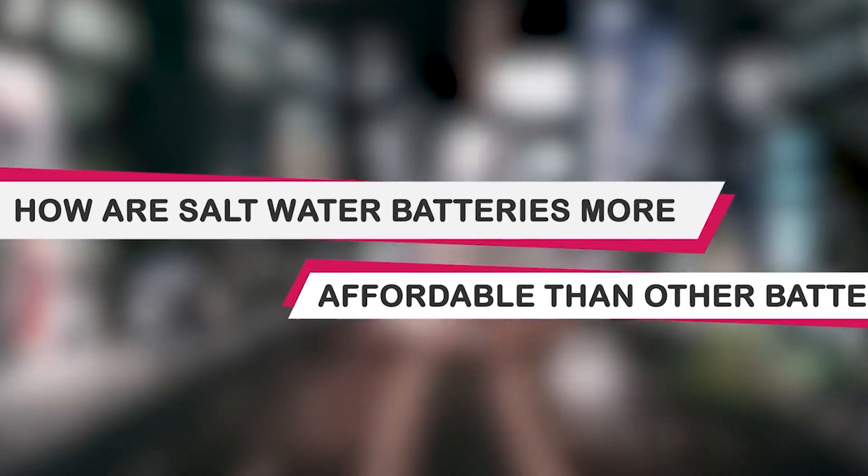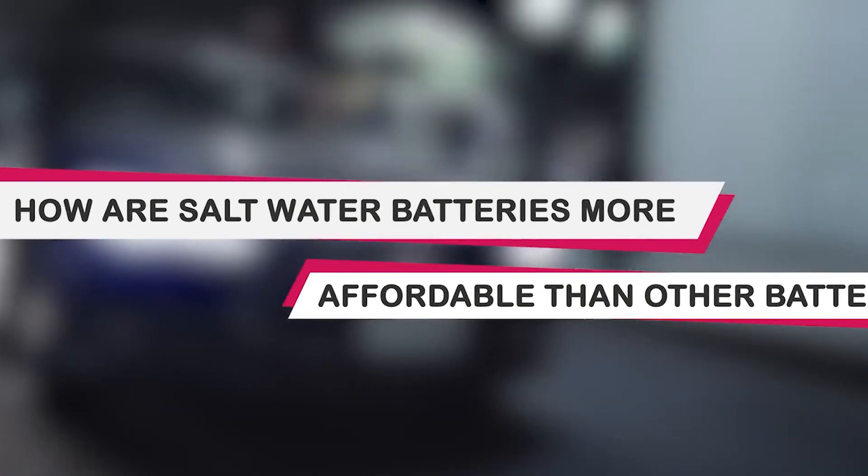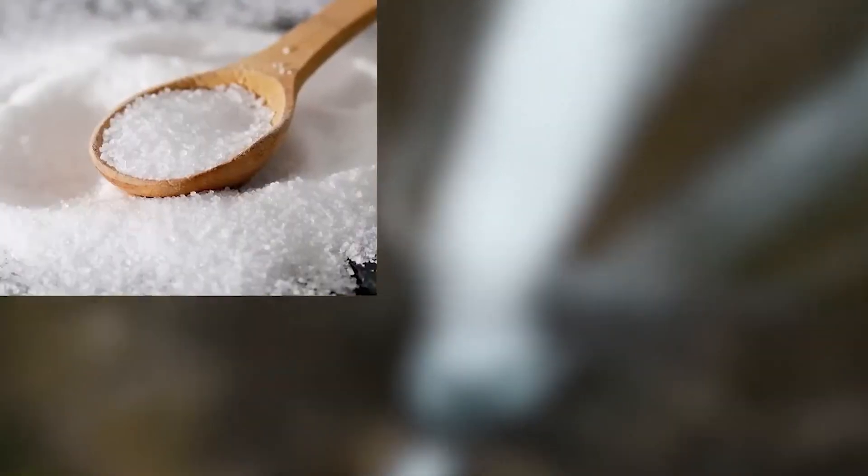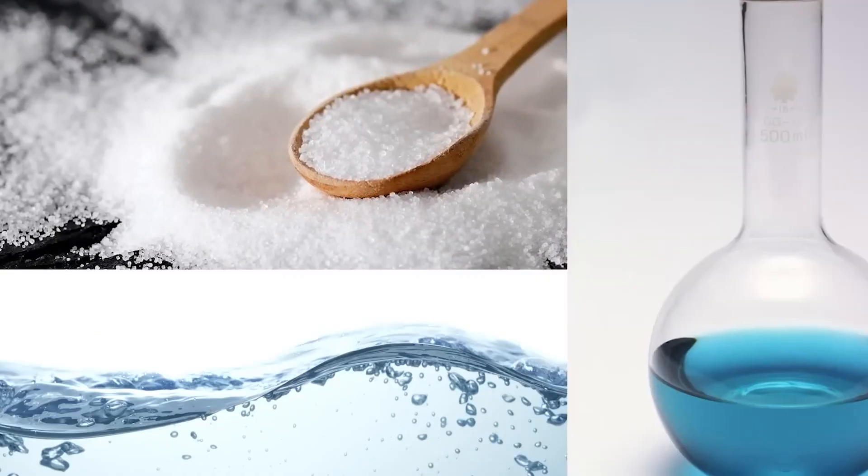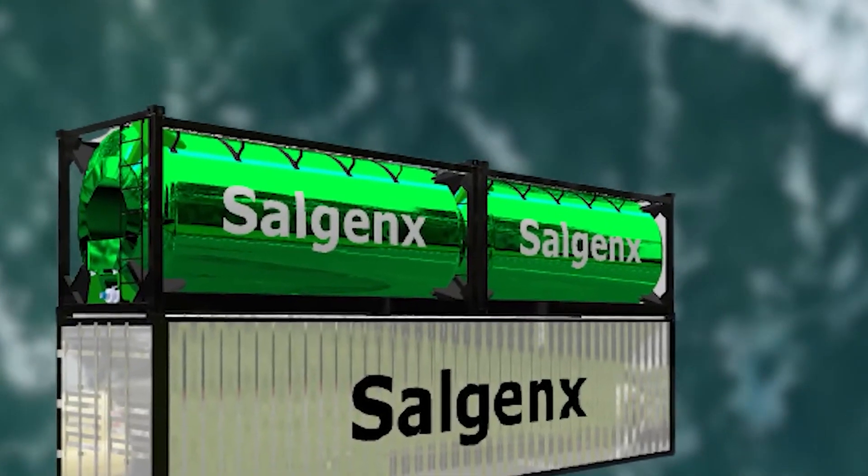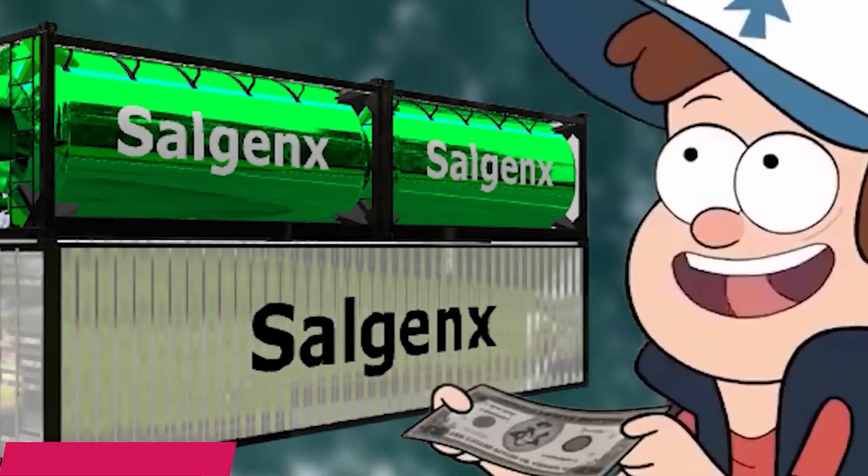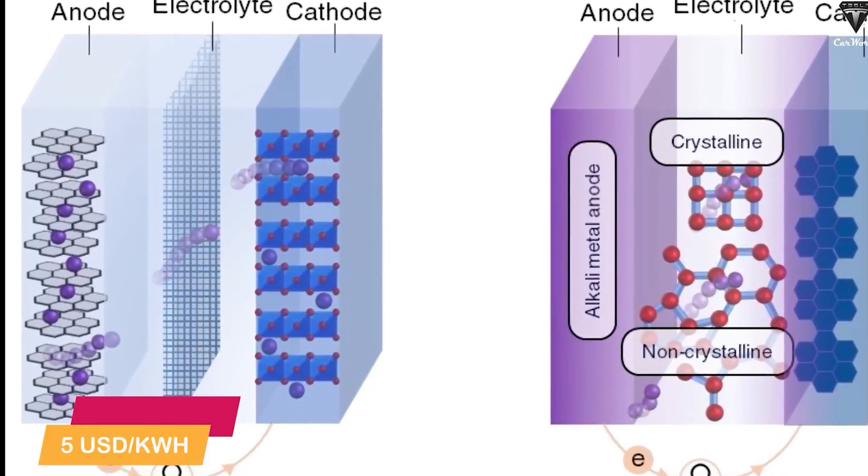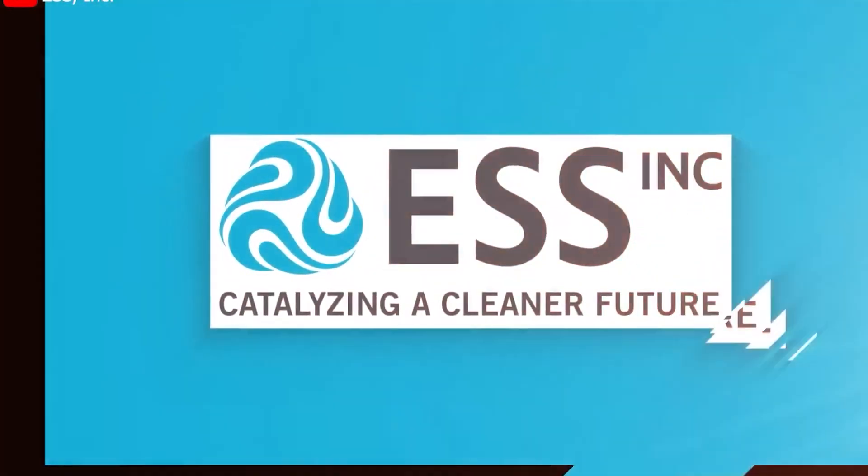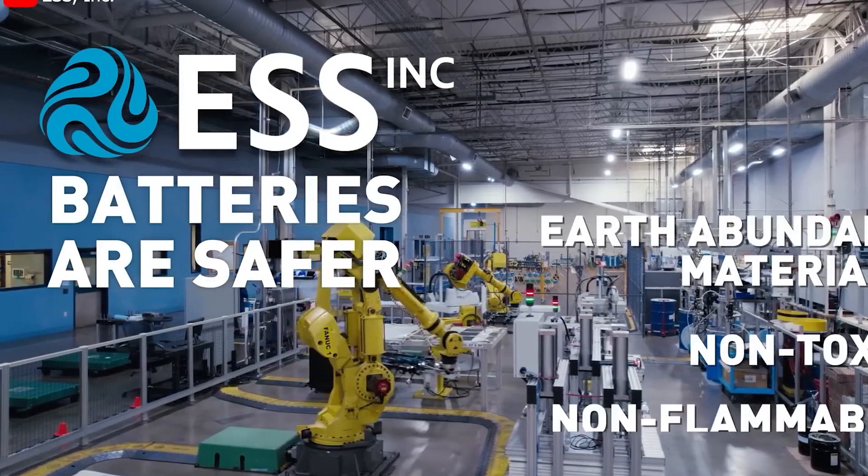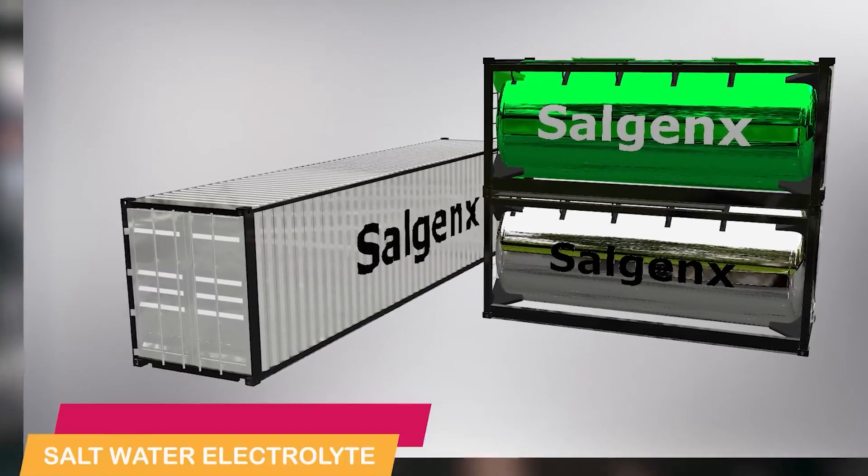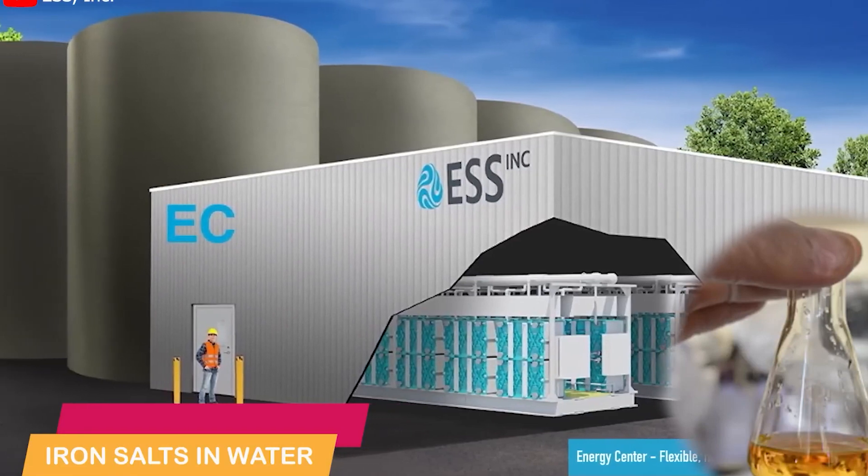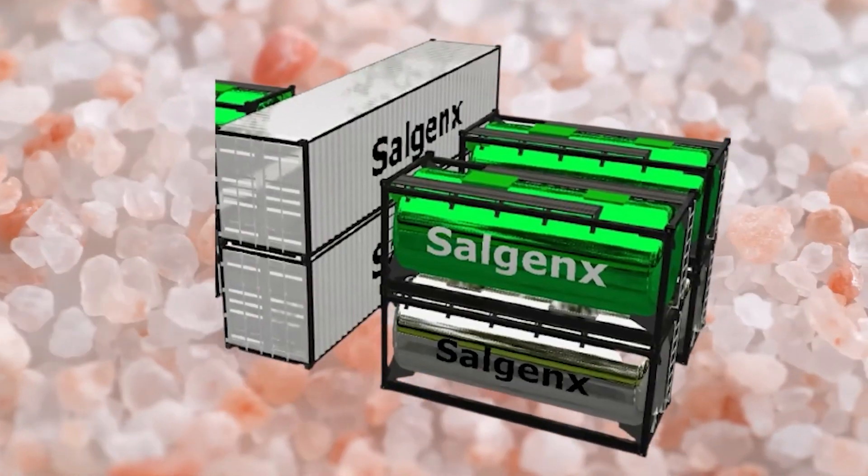What makes saltwater batteries even more intriguing is their affordability. Salgenex, an American company, has developed a saltwater flow battery utilizing saltwater and vanadium electrolyte. They claim that their battery costs less than $1,100 per kilowatt hour, primarily due to the low cost of electrolytes, which amount to less than $1.5 per kilowatt hour. Another U.S. company, ESS, is experimenting with saltwater flow batteries using iron salts and water, further reducing costs. By leveraging the abundance and cost-effectiveness of saltwater, these batteries offer a promising alternative to traditional options.